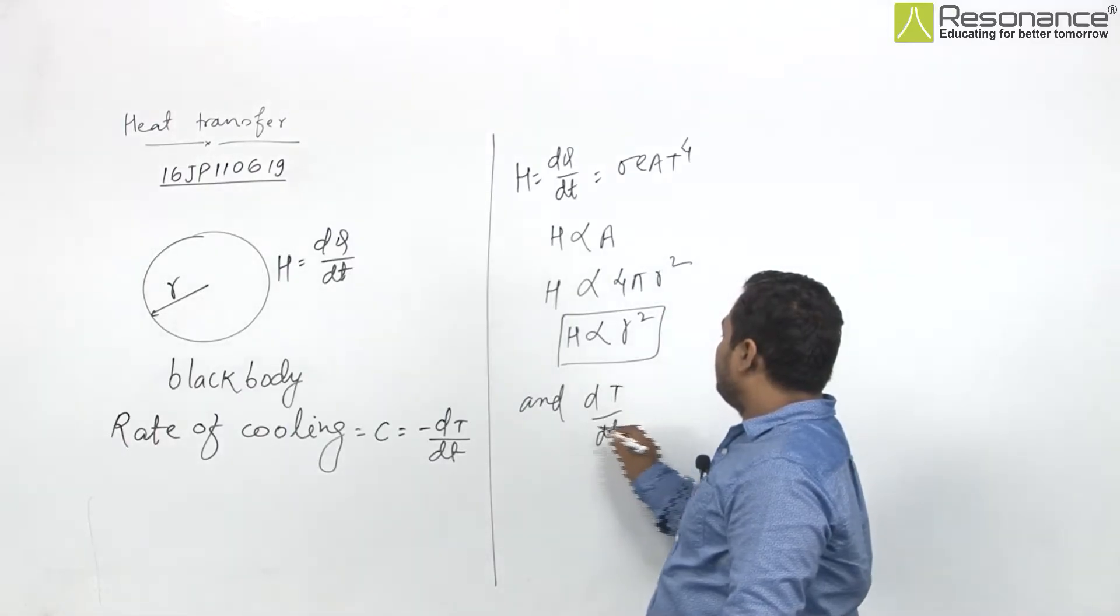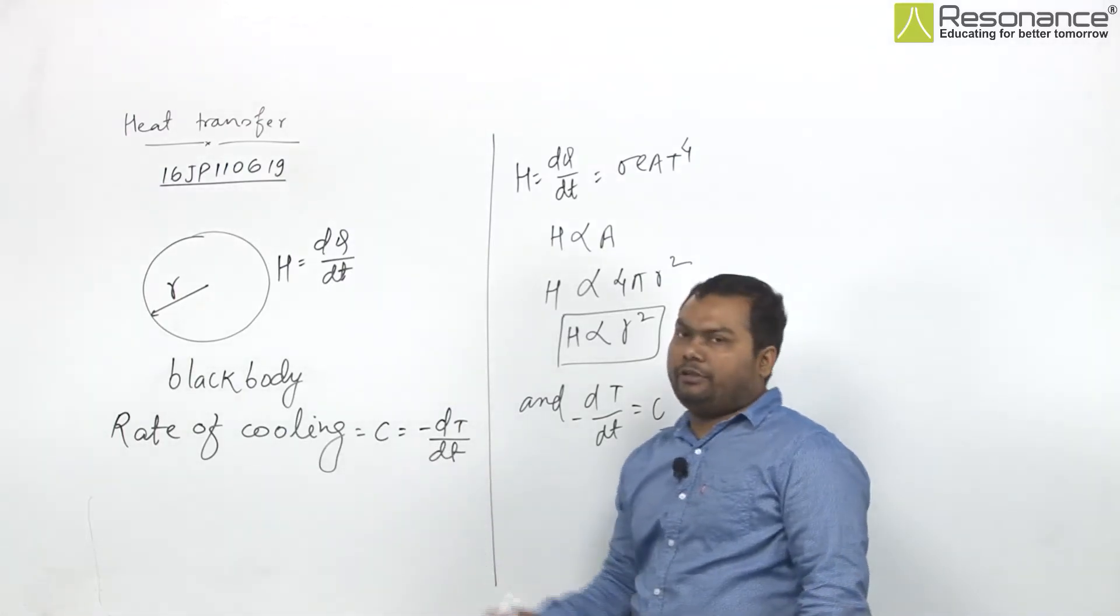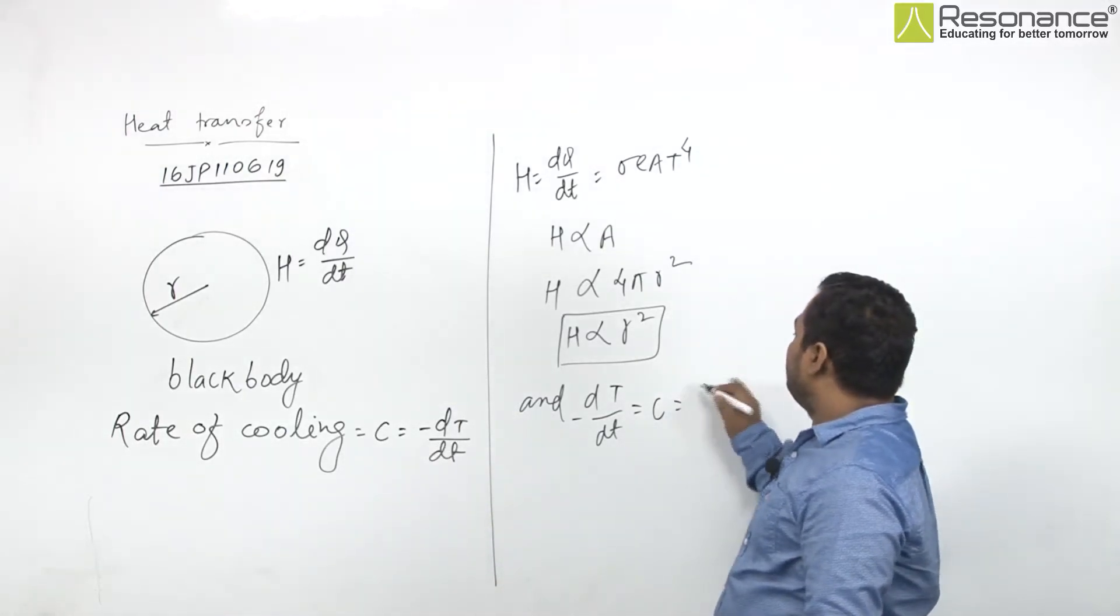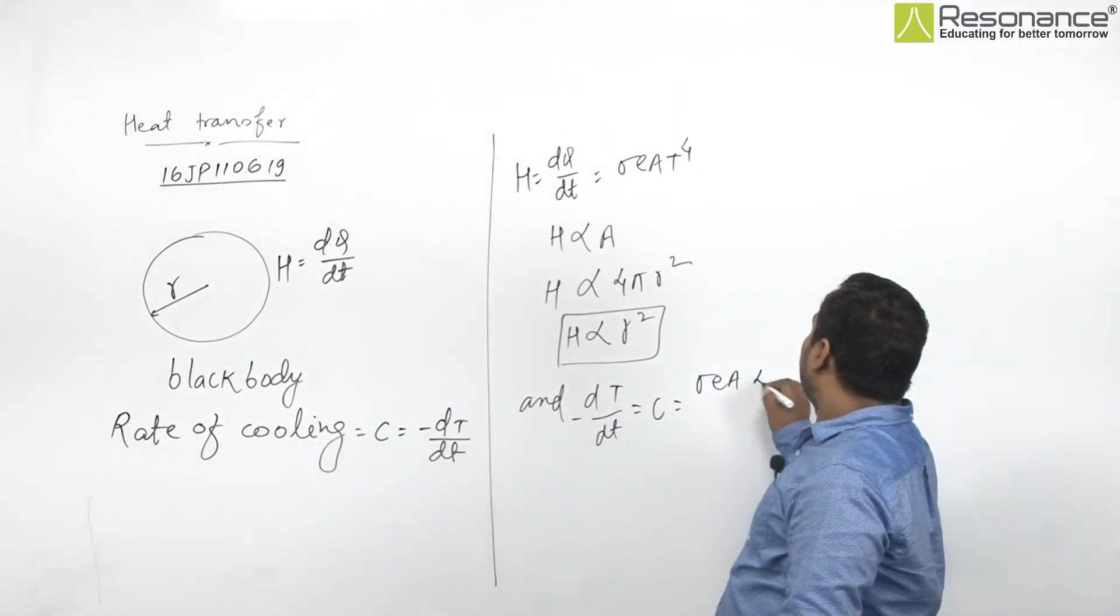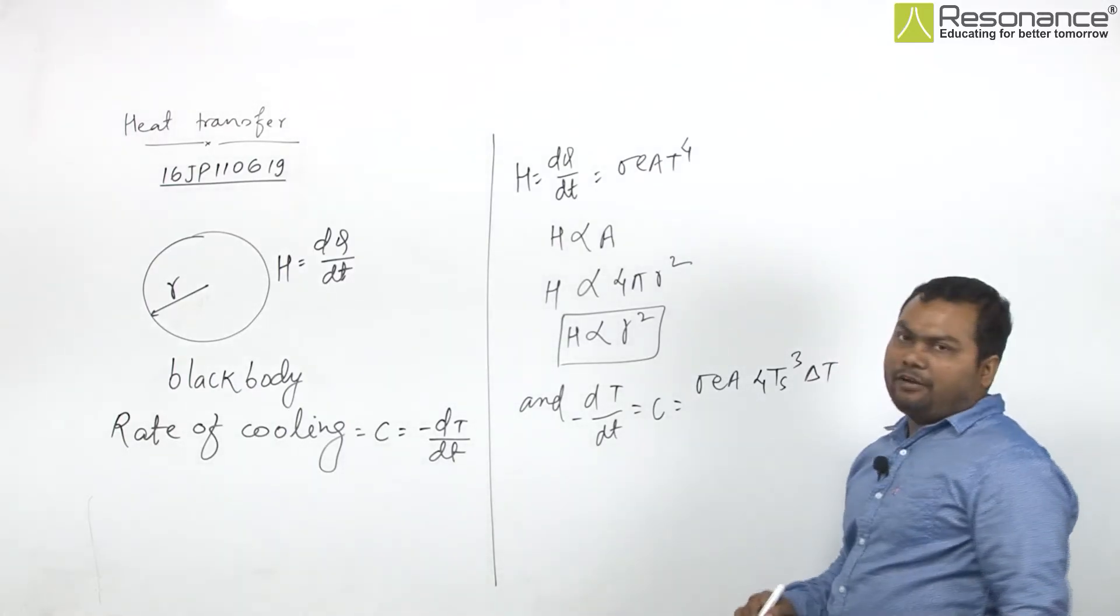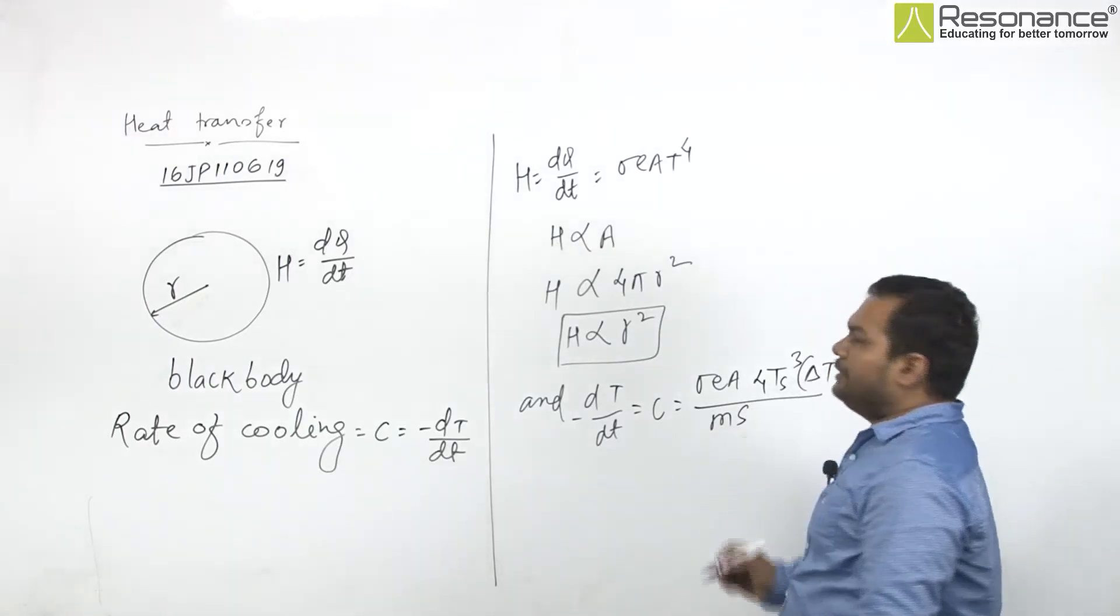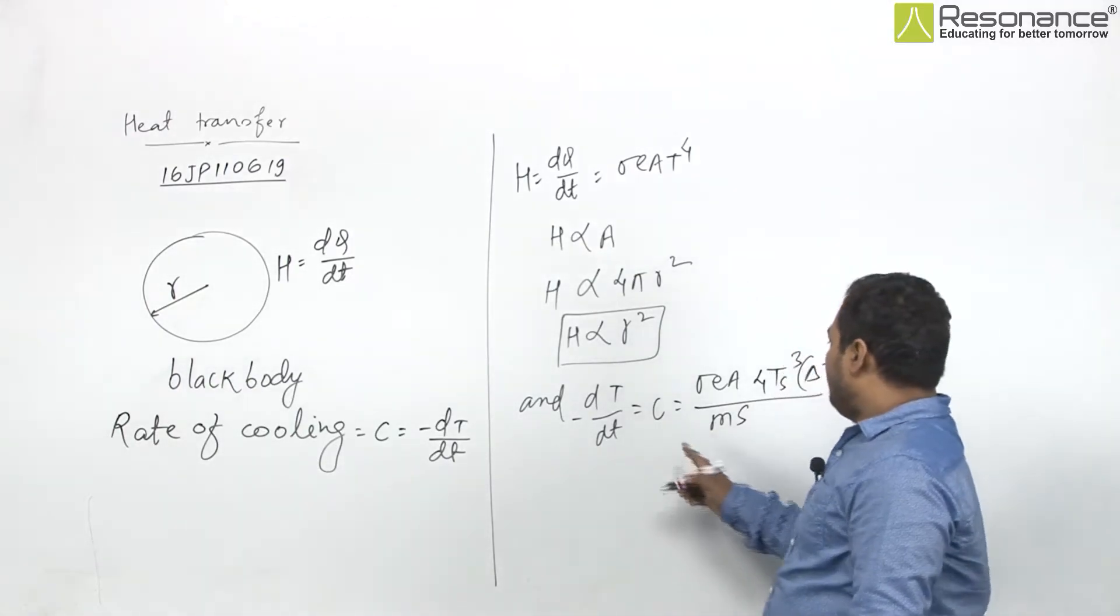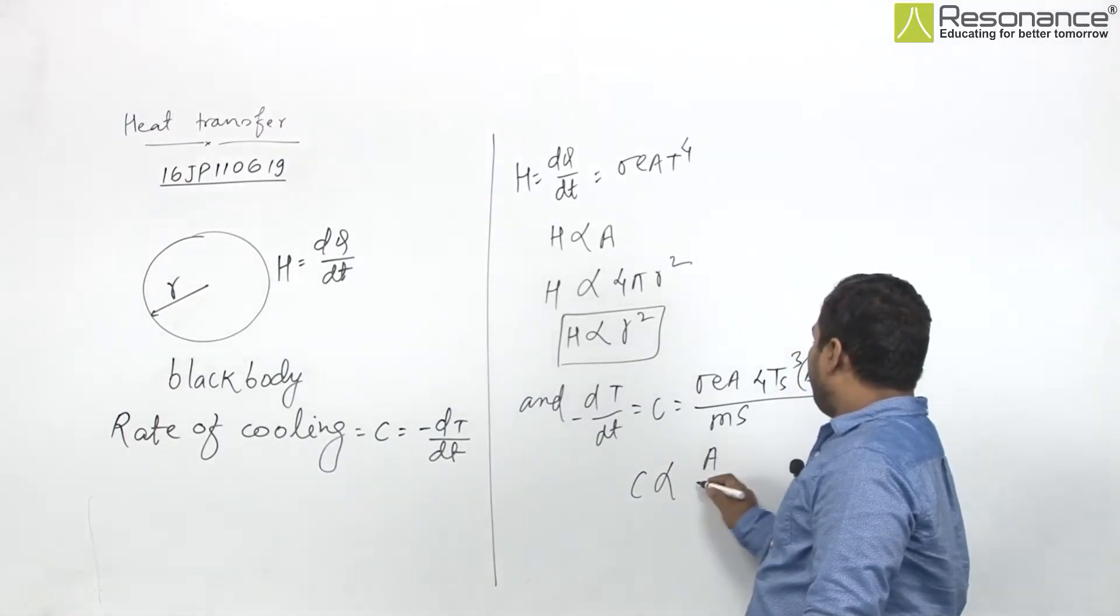And rate of cooling, that is negative dT upon dT, which is C over here, that is what? Sigma E A times 4 T to the power 3 multiplied with dT upon MS. This is what dT.